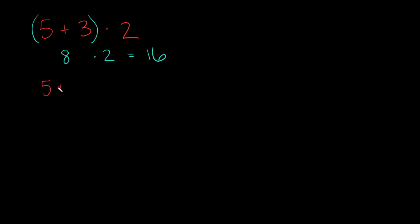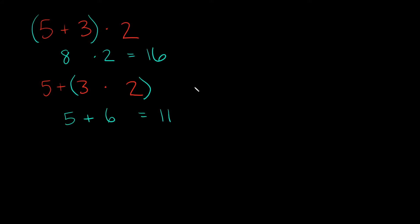Now I'm going to move the parentheses on the same problem — five plus three times two — but this time I'll put the parentheses around three times two. Whatever is inside the parentheses is where you start. Three times two is six. Now we deal with what's outside: five plus six equals 11. As you can see, I got two completely different answers. That's why it's so important to start with whatever is inside the parentheses, because if you don't, you will get the wrong answer.